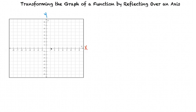The y-axis separates negative x values from positive x values. For every point along the y-axis, the x value will be zero. For points to the right of the y-axis, x values are positive, and for points to the left of the y-axis, x values are negative.